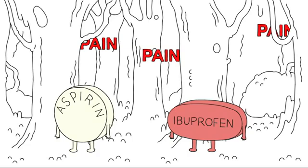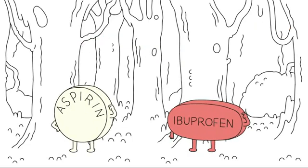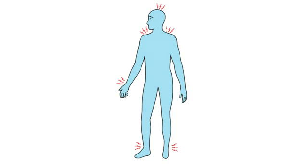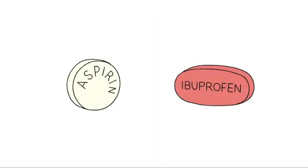But how do aspirin and ibuprofen know where the pain is? Well, they don't. Once the drugs are in your bloodstream, they are carried throughout your body and they go to painful areas just the same as normal ones. So that's how aspirin and ibuprofen work.